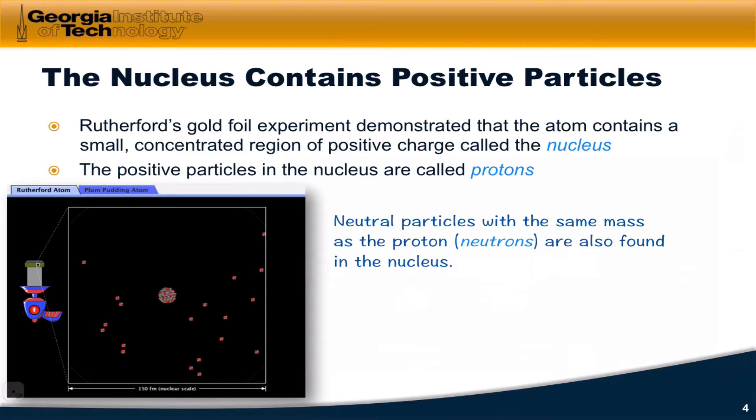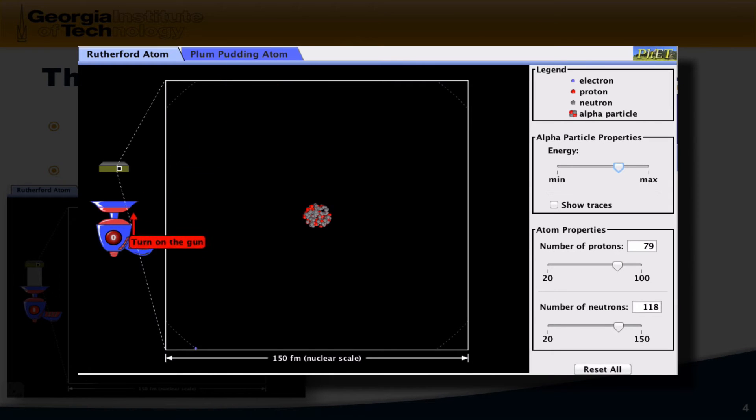In the gold foil experiment, Rutherford did something very simple. He took a source of what are called alpha particles, tiny particles that were known to be positively charged, and fired the particles at a very thin layer of gold foil. As the alpha particles approached the gold foil, most of the particles, in fact, passed right through the foil.